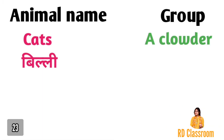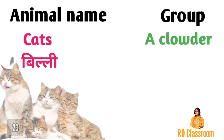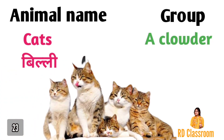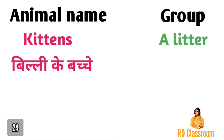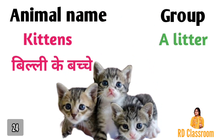Number twenty-three is cats, ya fir billi, jiske group ko kaha jata hai a clowder. Number twenty-four is kittens, matlab billi ke bachche, jiske group ko kaha jata hai a litter.